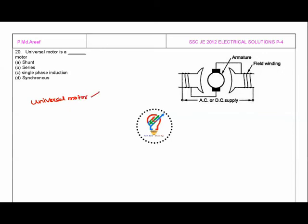So here the AC or DC supply, if you observe, suppose this is the armature winding and here we have the field winding. This is the field winding.